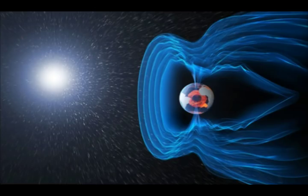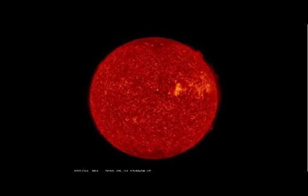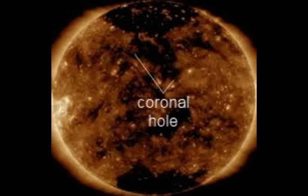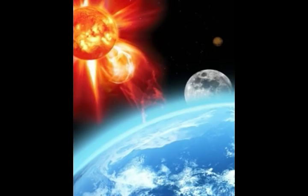Storm levels will almost certainly reach category G1 minor with isolated periods of G2 moderate storming as well. The aurora borealis could cross the US-Canadian border, and in the nights ahead the northern lights will be seen all the way down to Wyoming.